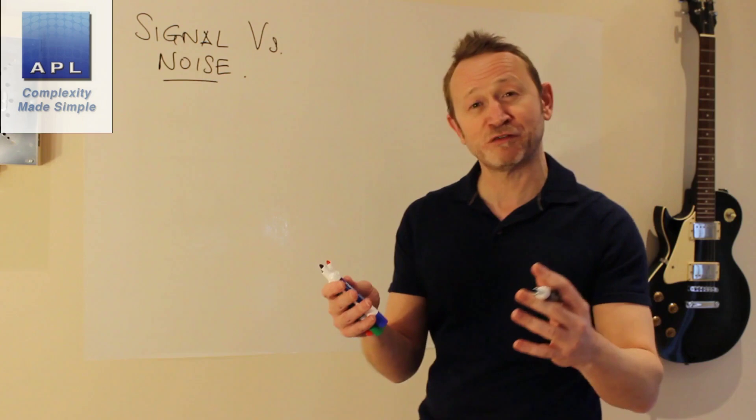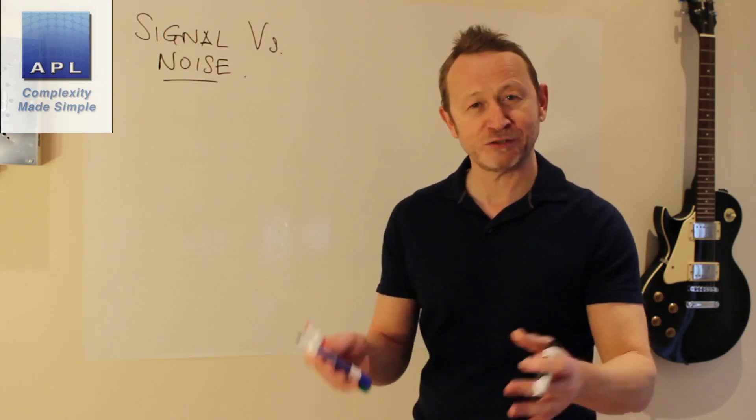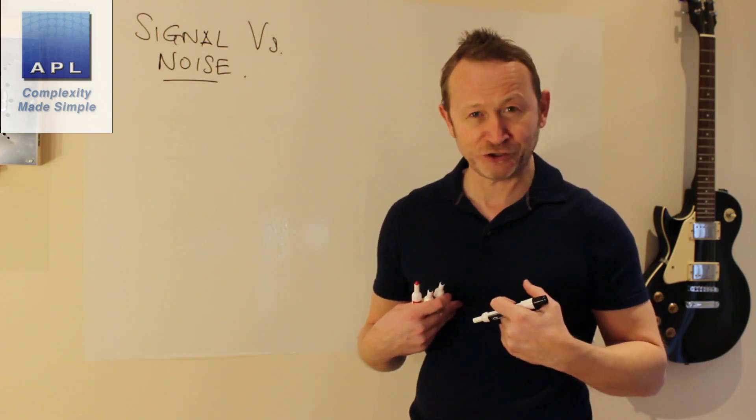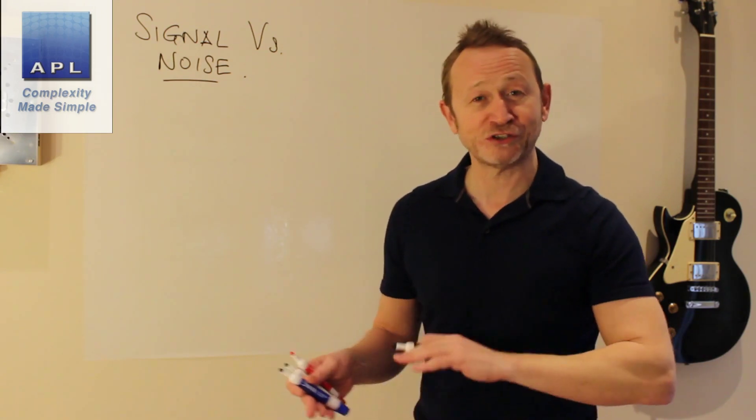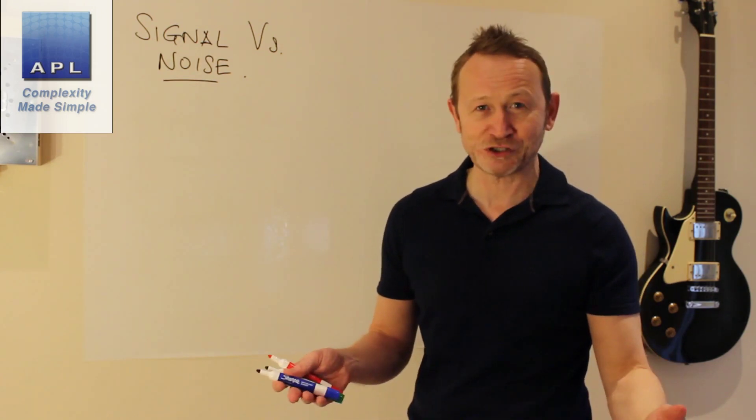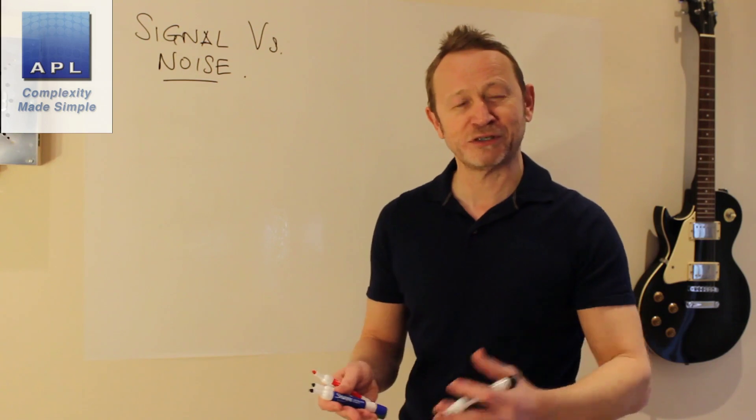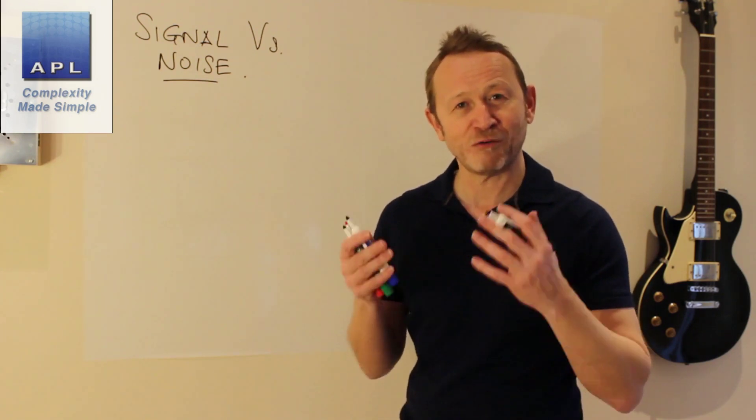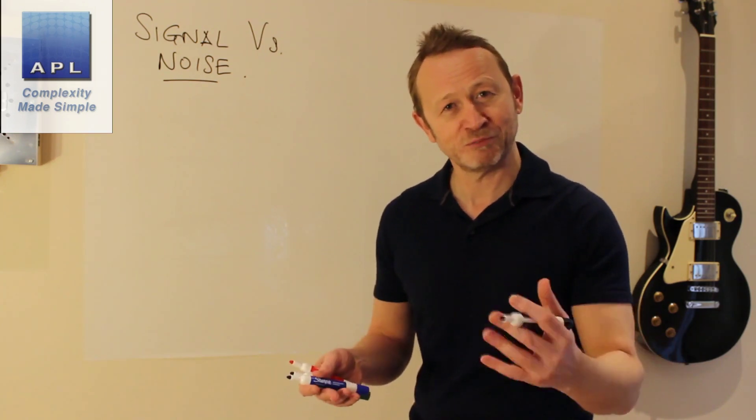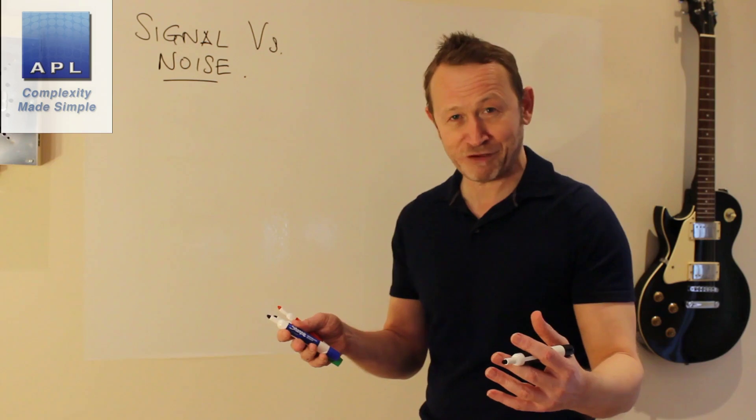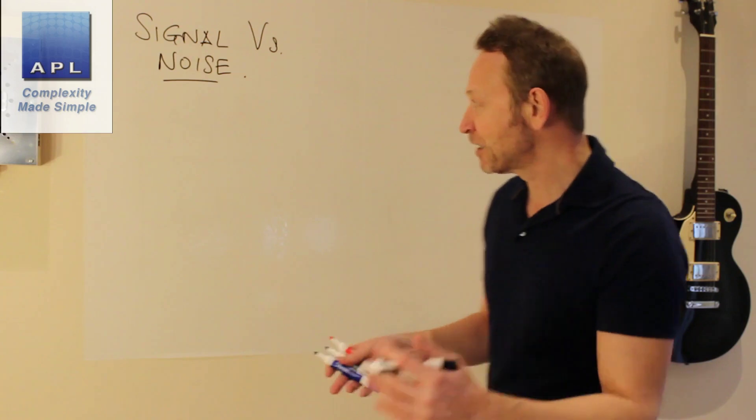I've said this before: your processes are all big random number generators. I'm a manufacturing guy. This applies to manufacturing systems, but it also applies to systems that are delivering services, whether it's your website, whether it's an insurance quote. Your processes are big random number generators when it comes to your key performance indicators.